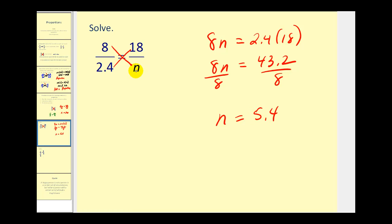So 8 times 5.4 would equal 43.2, which equals 2.4 times 18. And if you want, you can go ahead and check that.